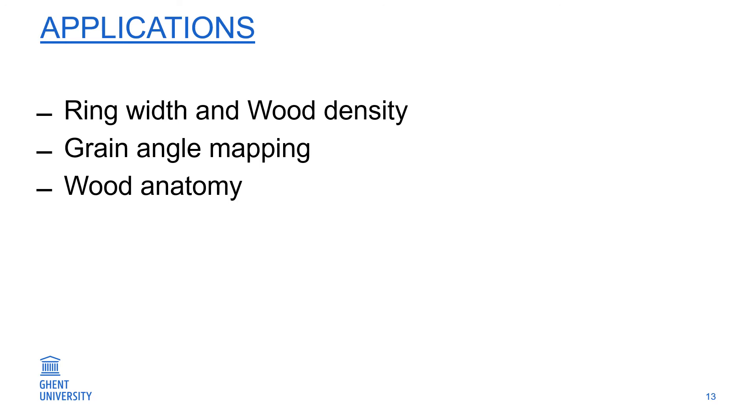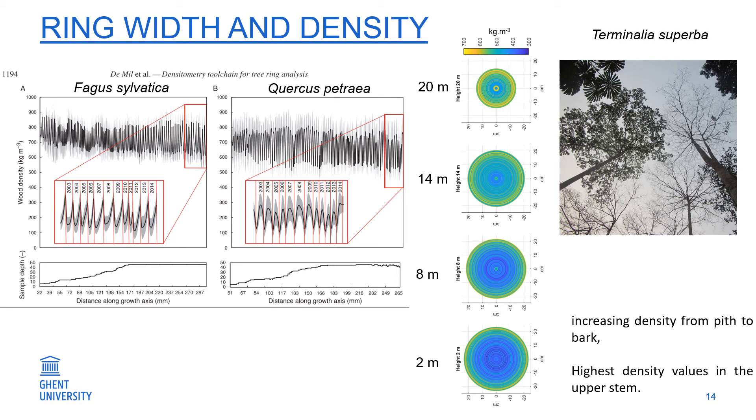Here are some examples from beech trees and oak trees where we can simultaneously assess density and ring width. Then there's the study on Terminalia superba.